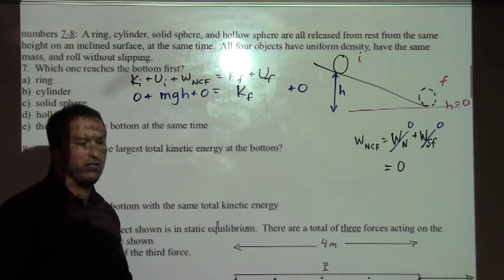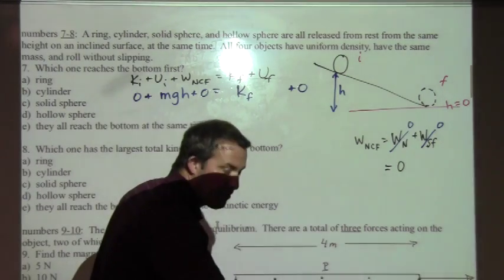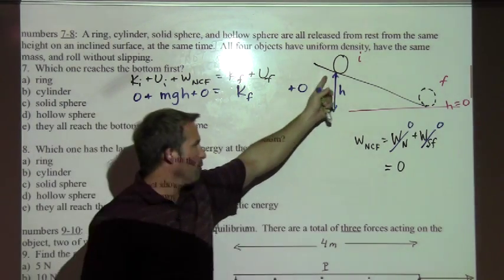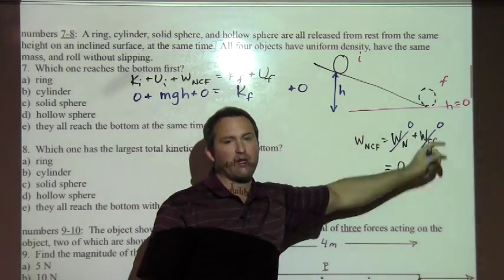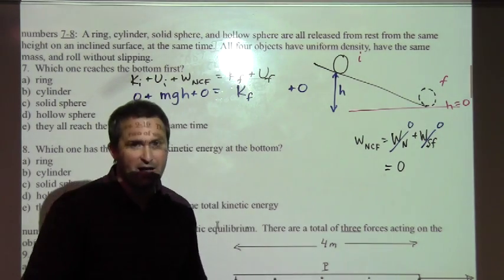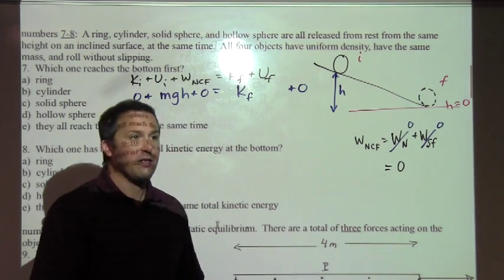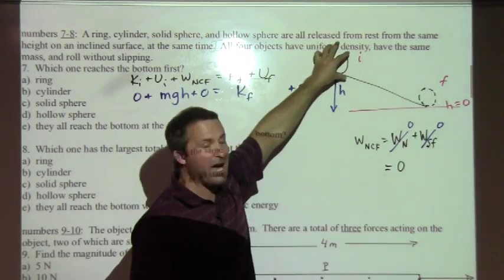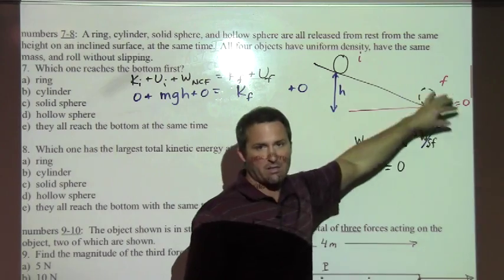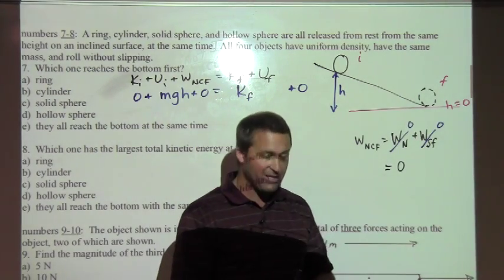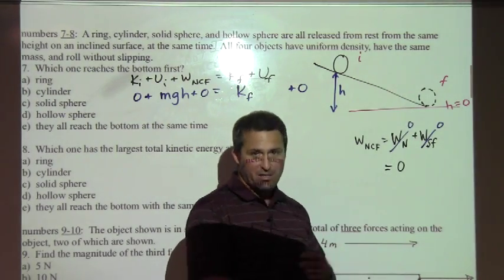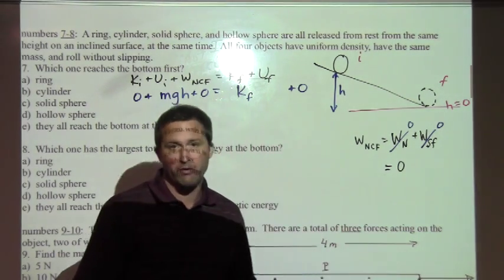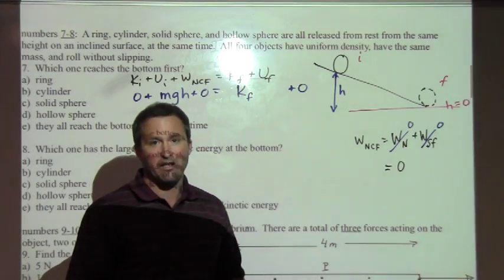So let's jump back to number seven. I'm going to erase this here. Because when the object rolls down to the bottom here, there's actually two components of the kinetic energy that we need to consider. There's both translational and rotational kinetic energy. This object as a whole is moving through space, so it has translational kinetic energy. It's simultaneously also rotating about its center, and so there's some rotational kinetic energy. We need to consider both of those terms.